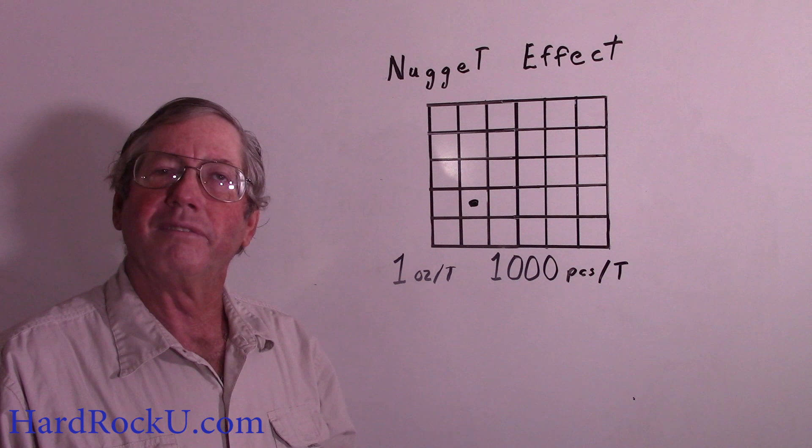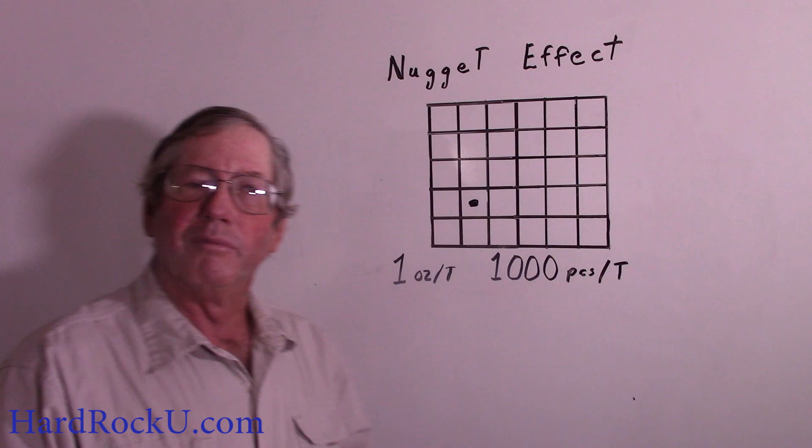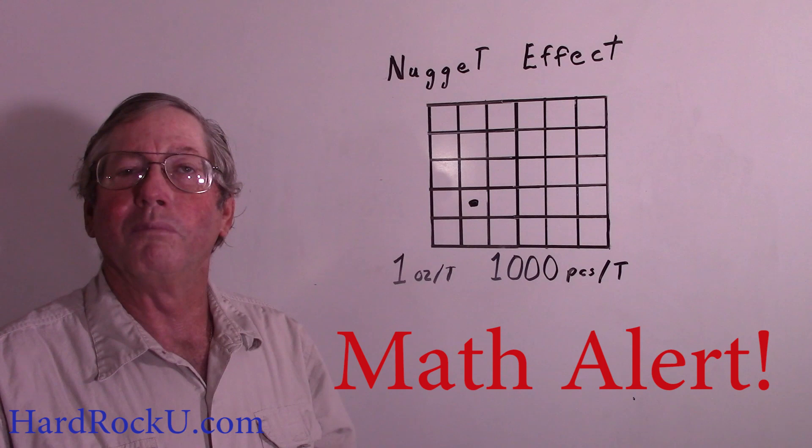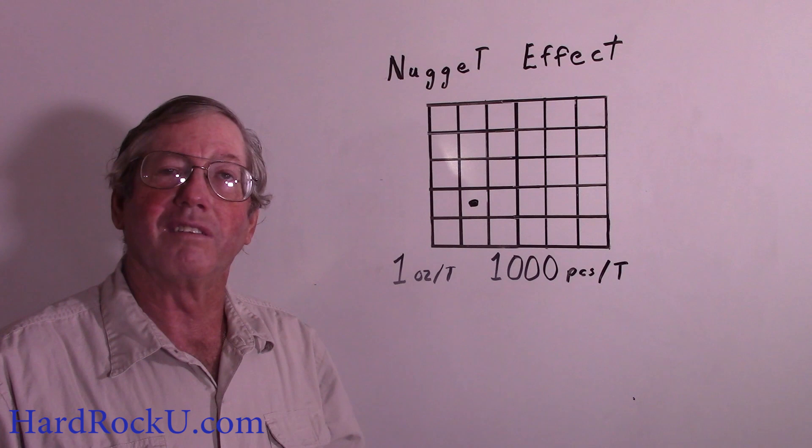Howdy folks, Keith Bowen again and this is Hard Rock University Classroom Edition. We're going to have to do a little mathematics — it's fairly simple stuff and it's really important. If you want to be able to make money mining gold, you need to be able to do some simple math. I'll walk you through it. Don't get intimidated.